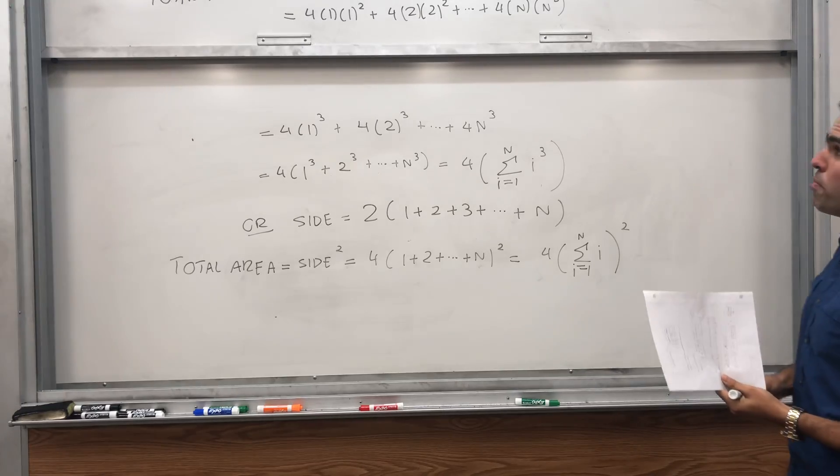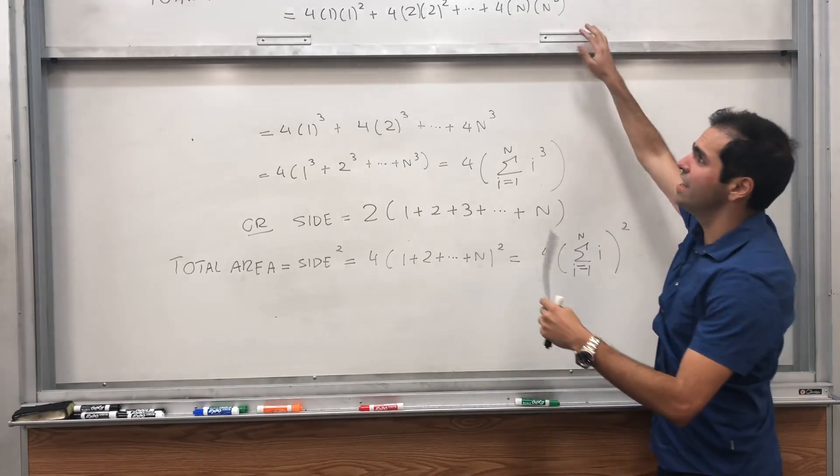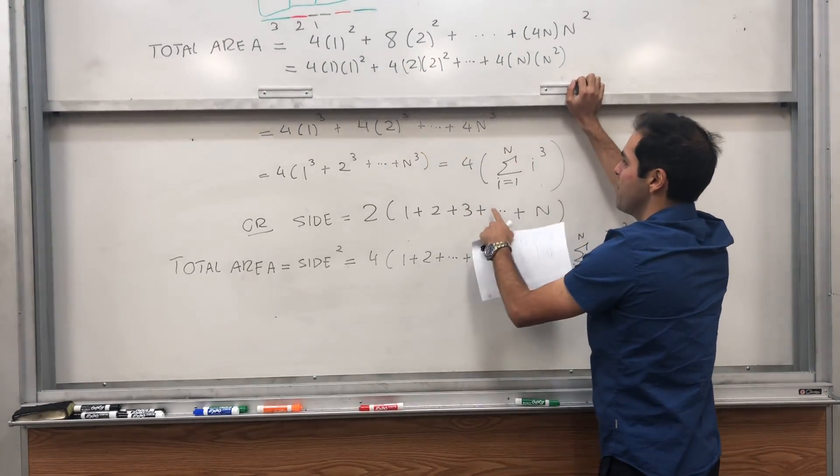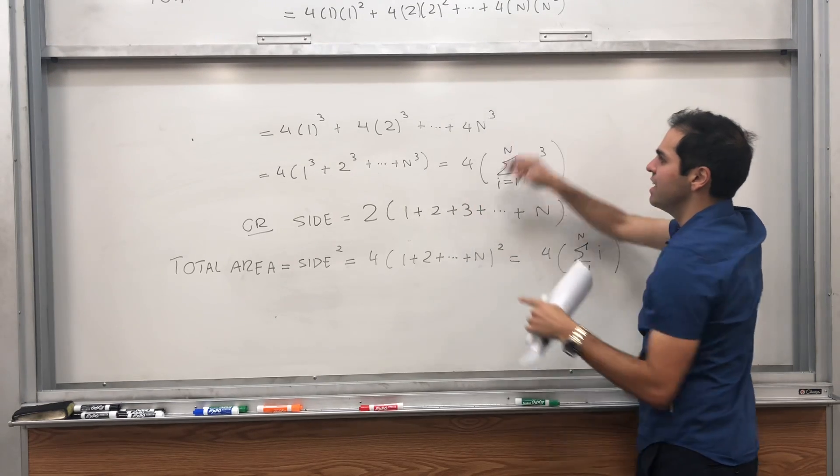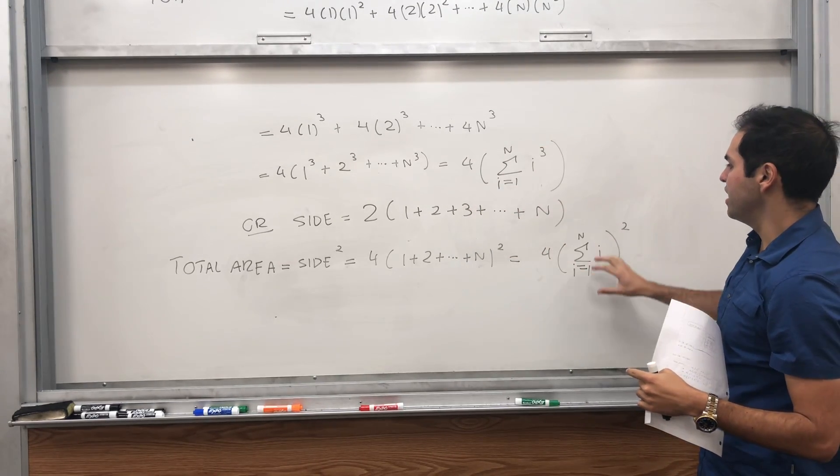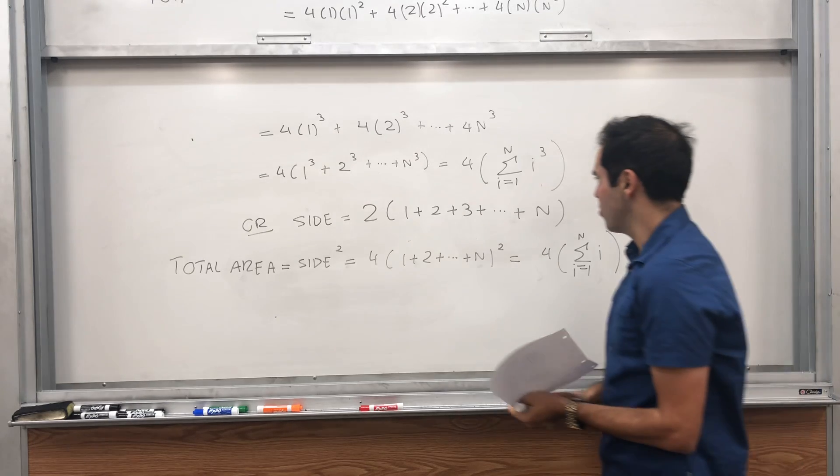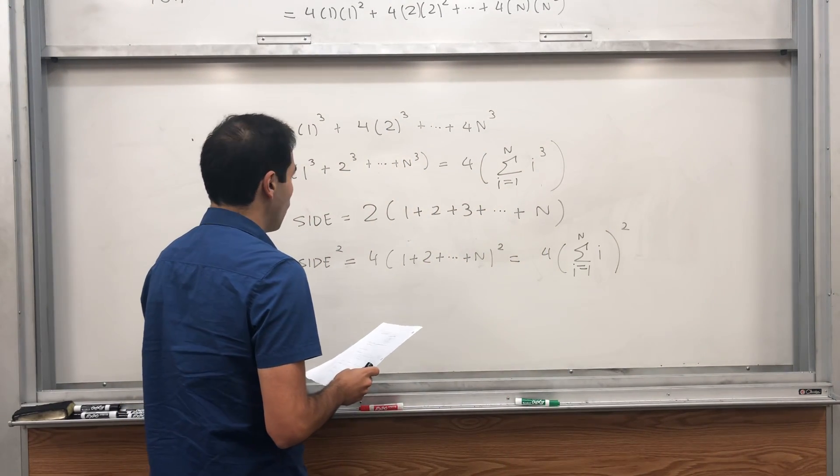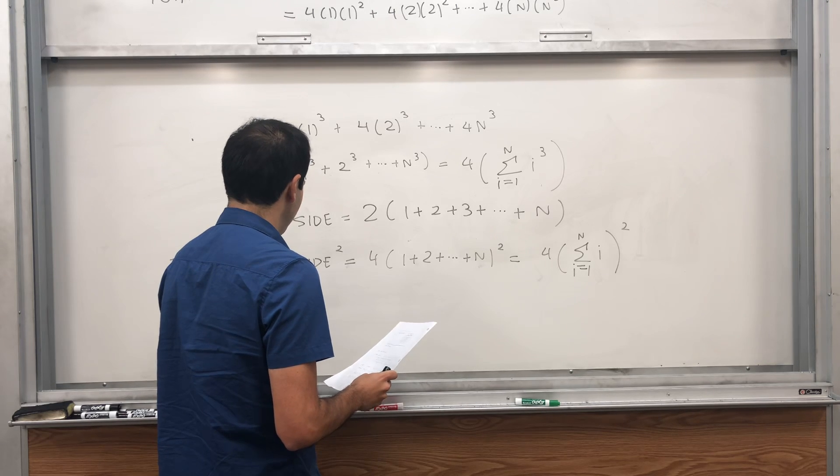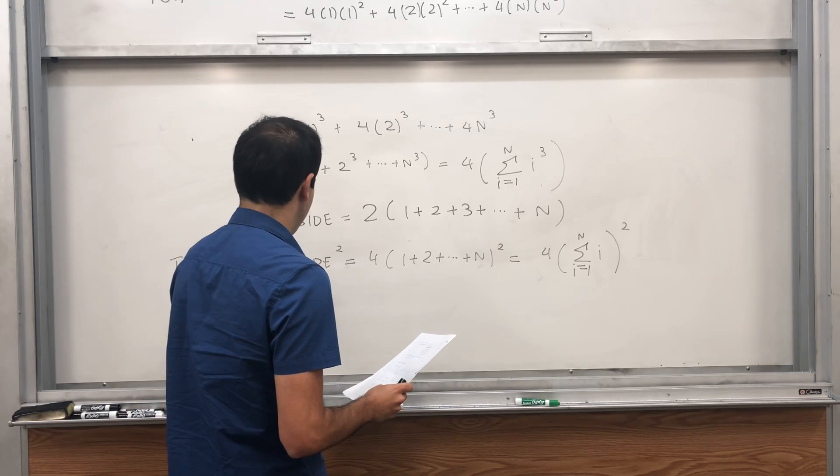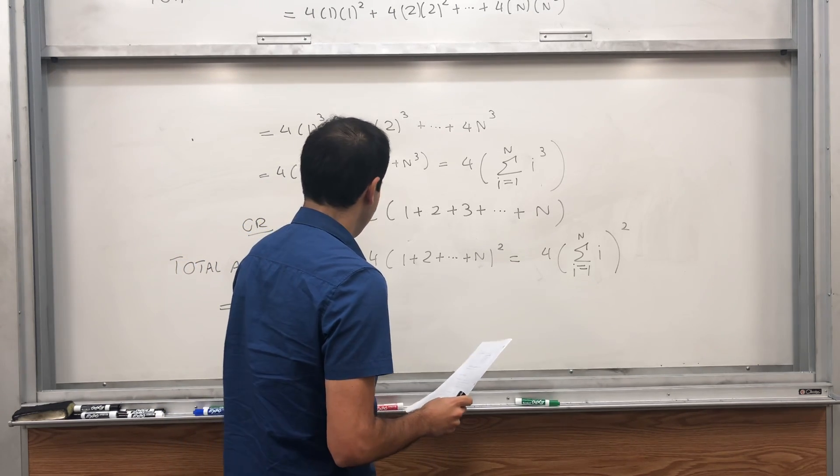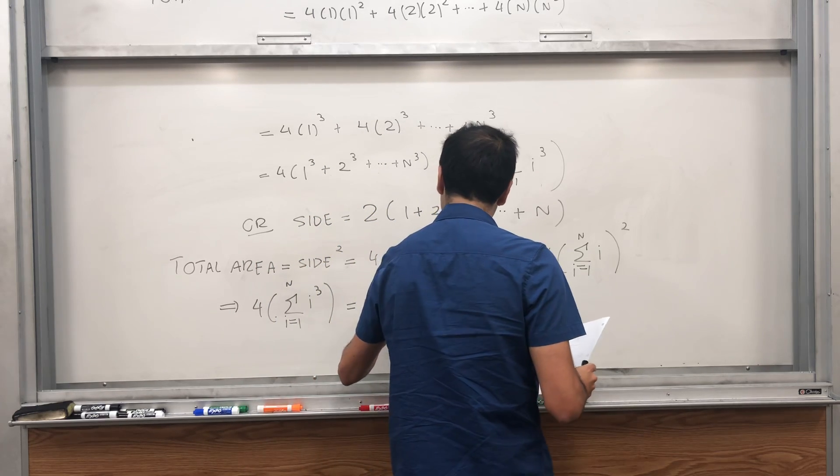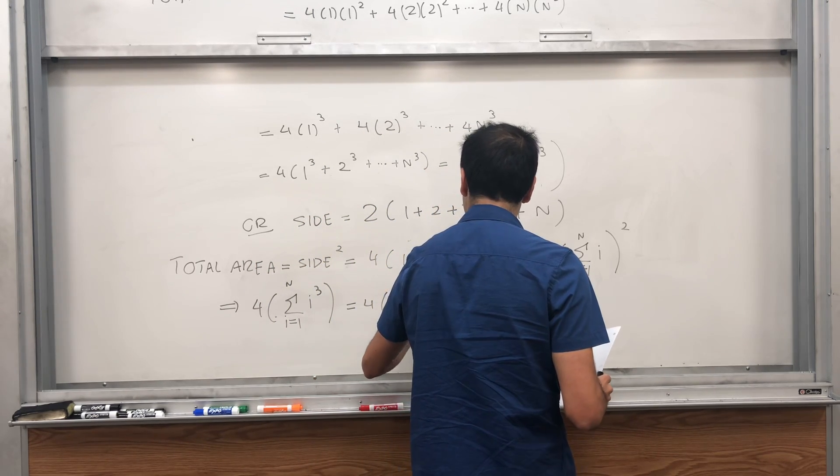And therefore, because both quantities calculate the same area, what we get is that 4 times this quantity equals 4 times this quantity. In other words, exactly what we want, 4 times the sum of cubes equals 4 times the sum of the integers squared.